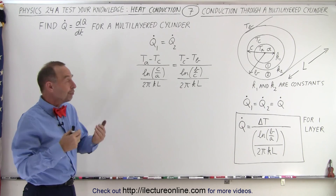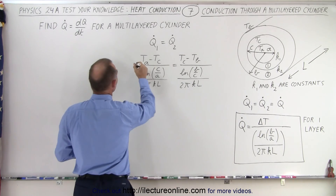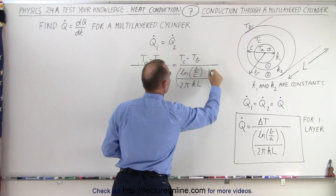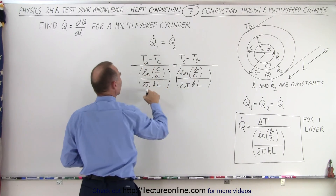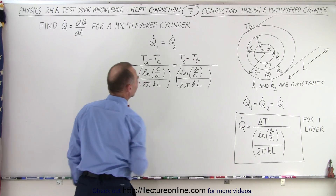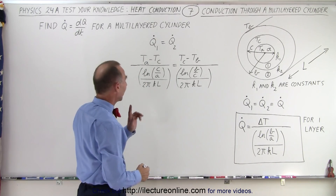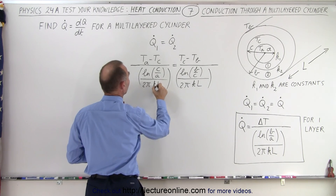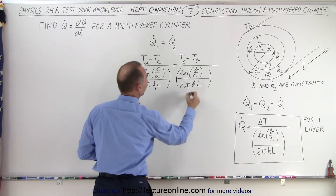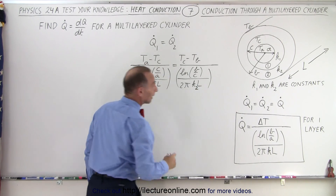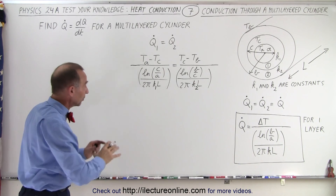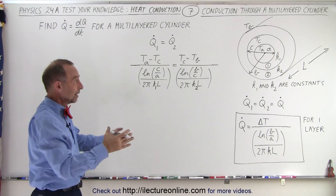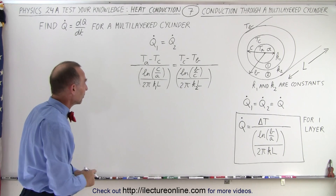Now we have two fractions that equal each other. These are what we call the two heat resistances of the two sides of the equation. Very importantly, we need to make sure that this is K for the first layer and K for the second layer, because they are not the same K — they are two different Ks. If they were not different, then we wouldn't have multiple layers; it would all be the same material.